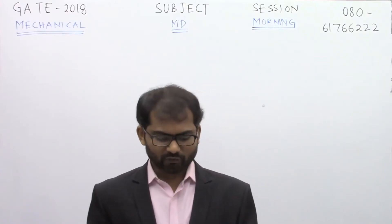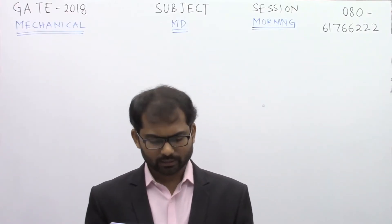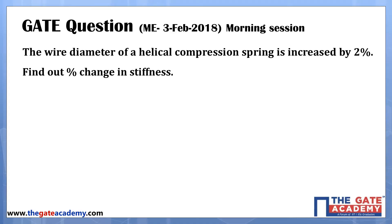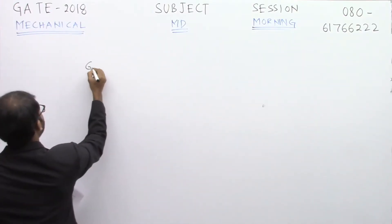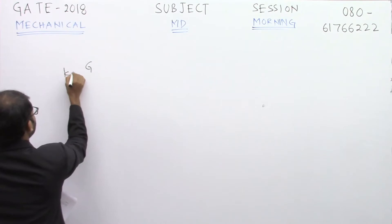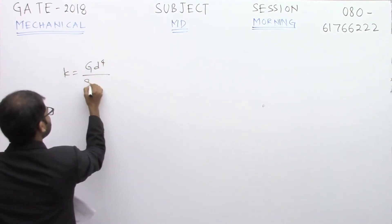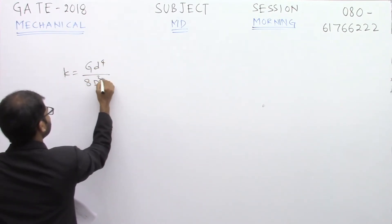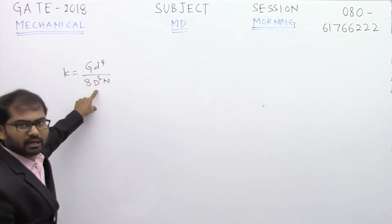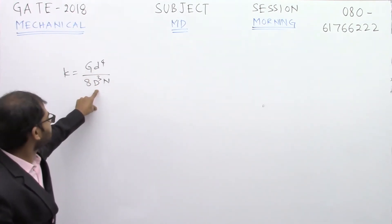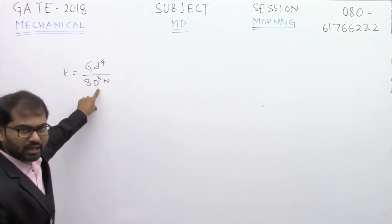This is a question from the subject of machine design. The wire diameter of a helical compression spring is increased by 2 percent — find the percentage change in stiffness. The stiffness for a helical compression spring is given by k = Gd⁴ / (8D³n), where small d is the wire diameter, capital D is the coil diameter, and n is the number of active coils.